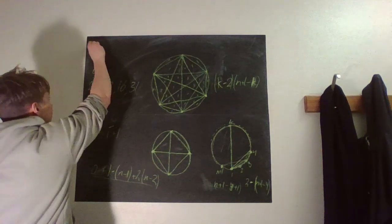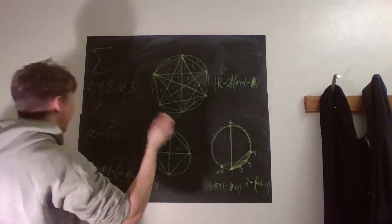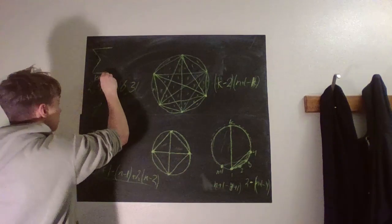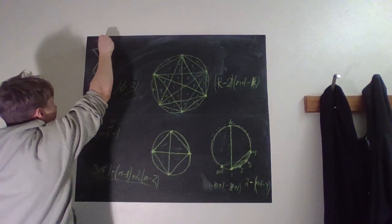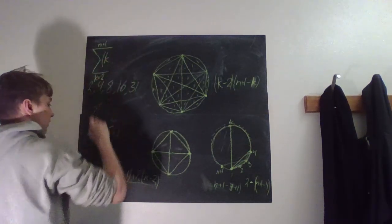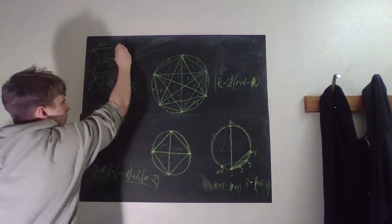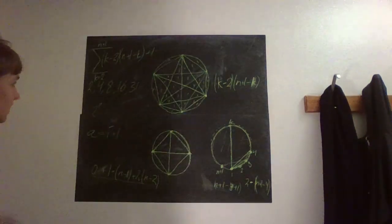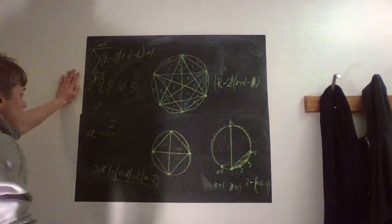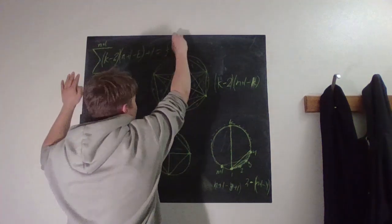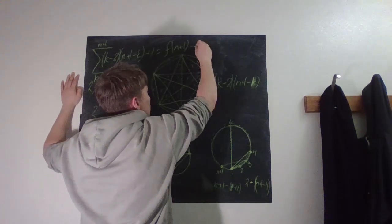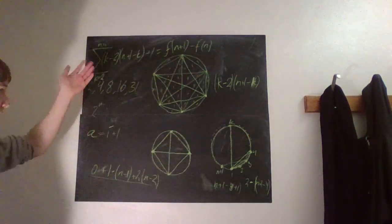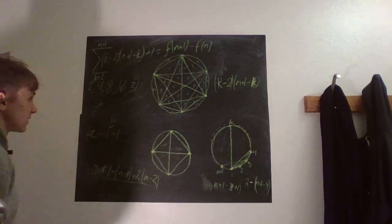So the number of new areas when adding a point to a circle with n existing points is: the sum for k from 2 to n+1 of (k minus 2) times (n+1 minus k), plus 1. This counts all new intersections plus the baseline split. We now need to find a closed-form function satisfying this recurrence.